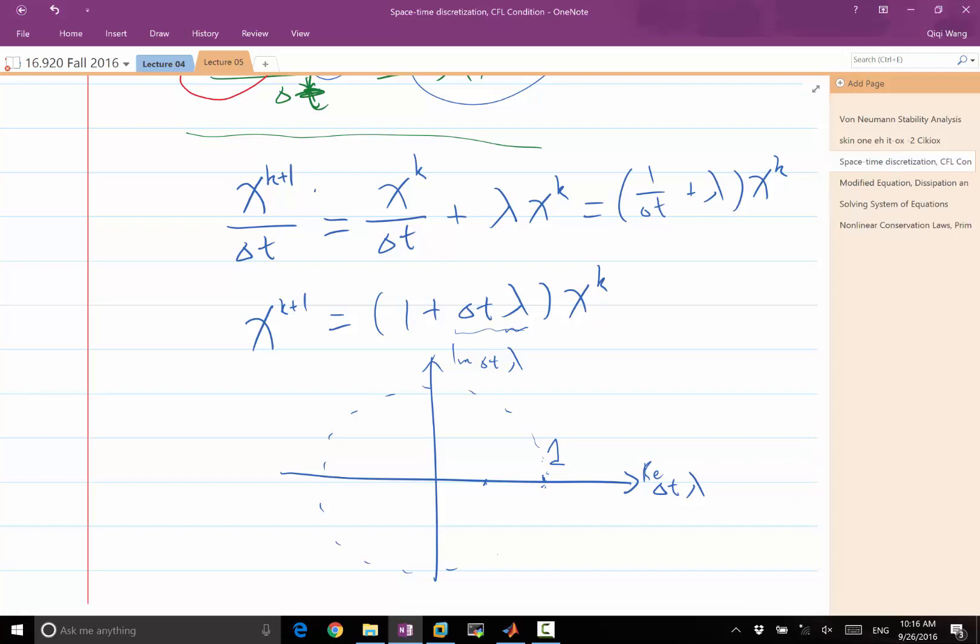So your answer is negative 1. I draw a circle like that. That's the right answer. Because if delta t lambda is within this circle, then 1 plus delta t lambda is going to be in this dotted, like in this dashed circle. Right?